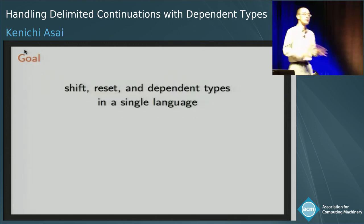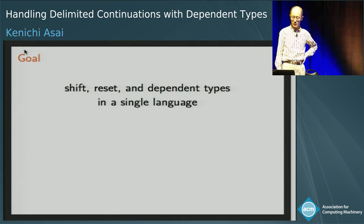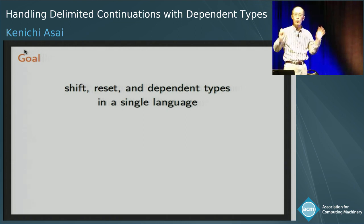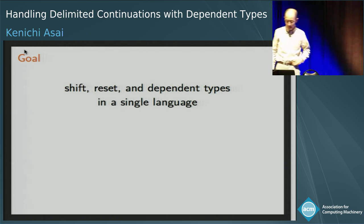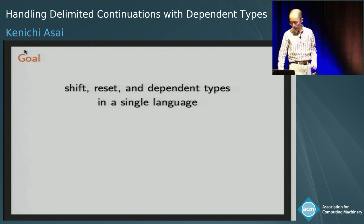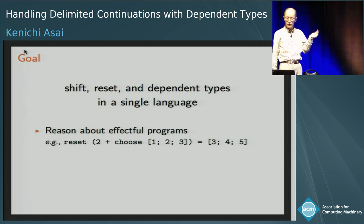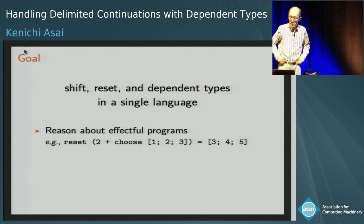We continue the discussion of shift and reset, but in a richer language. Our goal here is to use shift and reset and dependent types in the same language. If we use shift and reset, we can express any monadic effects. For example, we can use the choose function to implement a non-deterministic program.